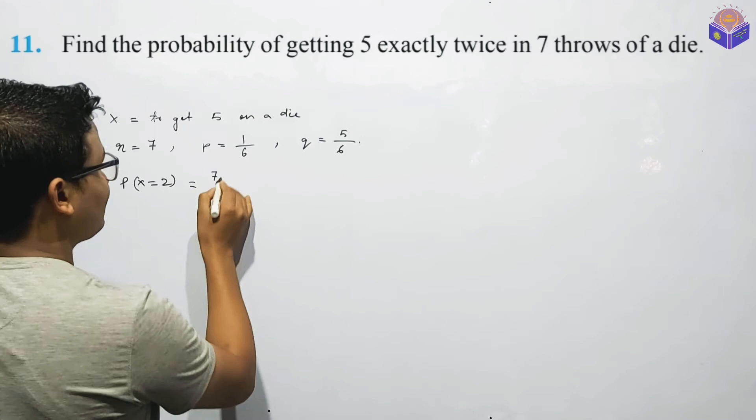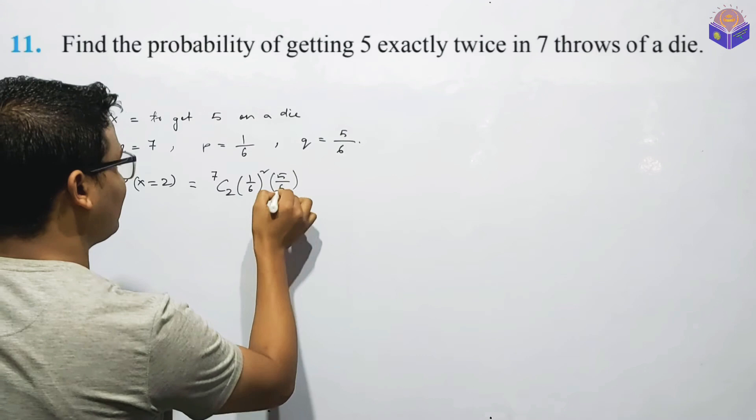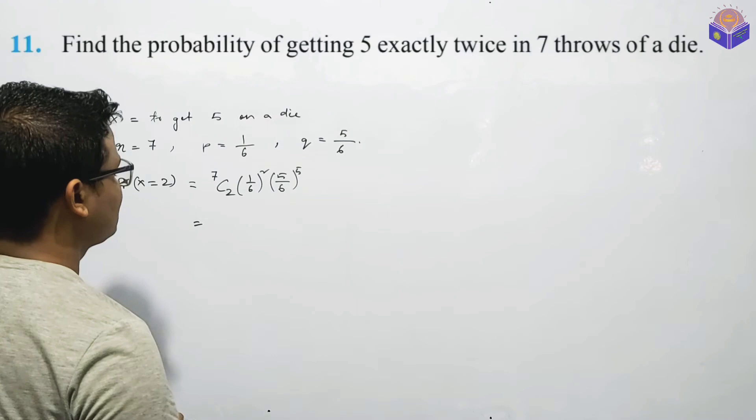It is 1 by 6 whole square into 5 by 6 whole to the power 5. If you have 3 times, 2X equals 2. So if you have 3 times, 3 times, 2X equals 2. This gives 21 into 6, 6, 36 into 5.